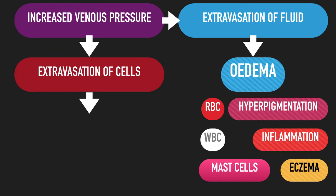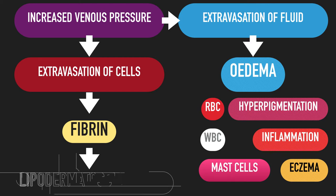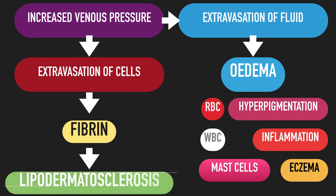Fibrin, which is made up of strands of protein within blood and is important in the process of blood clot formation, can also leak into the subcutaneous tissues. This contributes to fibrosis or hardening of the skin and subcutaneous fat. The medical term for this is lipodermatosclerosis.